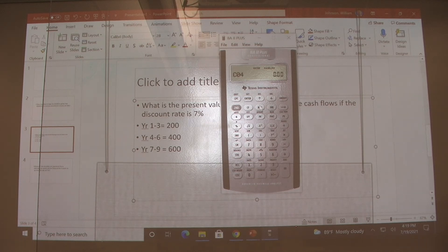We have no cash flow four. We have NPV, what's our interest rate? 7%. Enter. Down.